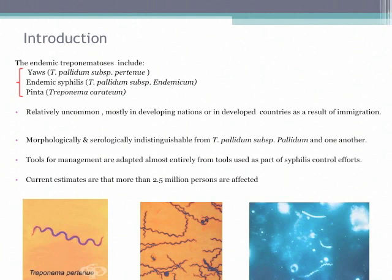Endemic treponematoses consists of three basic entities. The first one is yaws, which is caused by chronic infection of Treponema pallidum subspecies pertenue. The second one is endemic syphilis, which is caused by Treponema pallidum subspecies endemicum, and it's also known as bejel. The third one is pinta, caused by a different species, basically Treponema carateum.